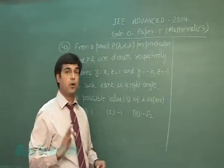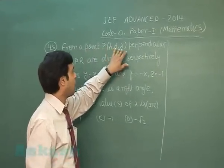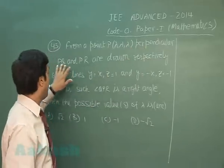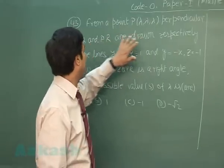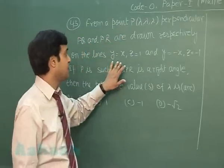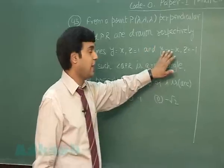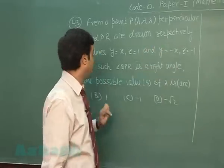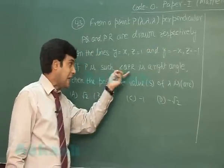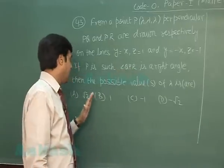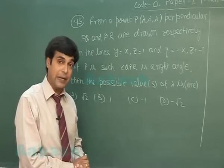Okay, let us go for question number 43. From a point P(λ, λ, λ), perpendiculars PQ and PR are drawn respectively on the lines y = x, z = 1 and y = -x, z = -1. If P is such that angle QPR is a right angle, then the possible value of lambda. This is what we have to obtain.